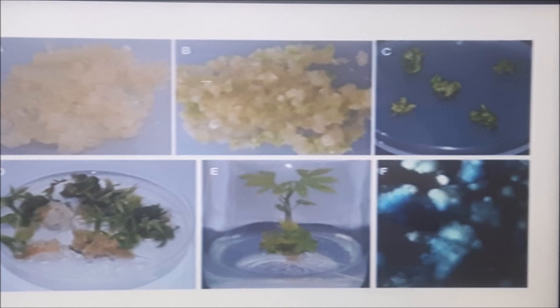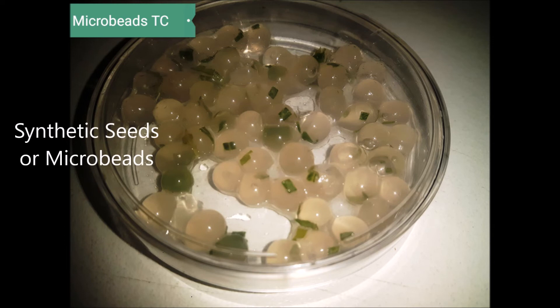Here are some growth stages: you've got your callus at the top, and once it produces organs you start to change the medium, then you get different shoots and roots coming out for a plantlet. This is a cool synthetic seeds or microbeads that I made with some tree culture — I was waiting for them to produce some organs inside.